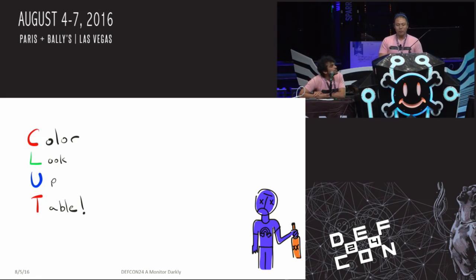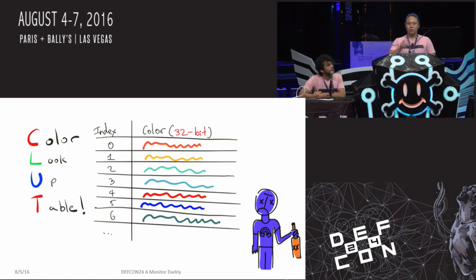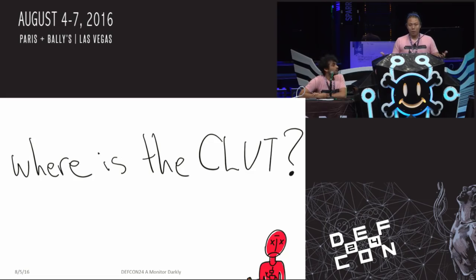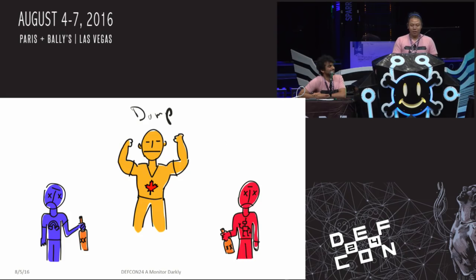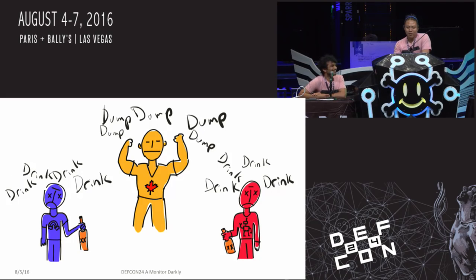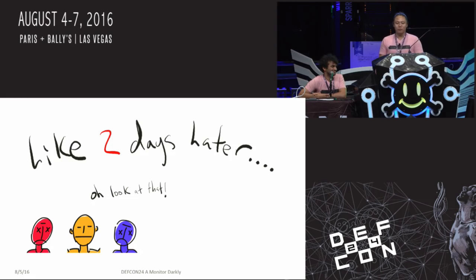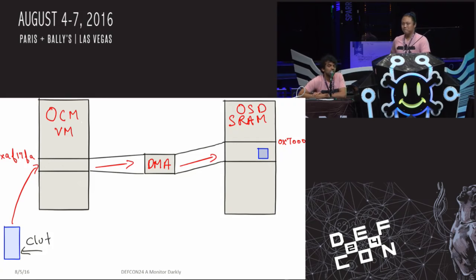It turns out this monitor uses a color lookup table — basically an index structure that uses four bits to index into 32-bit colors. This lets you save space: at most 16 different colors, but each can be 32-bit deep. The big question now: where's the lookup table? Can we modify it? We did a very collaborative effort with Francois for days and days, dumping lots of memory. Two days later we finally found the structure we think is the lookup table. You generate a specific color lookup table structure, write it to the OCM memory region, DMA-map it over to OSD SRAM, and OSD picks it up and displays the color for that specific image.